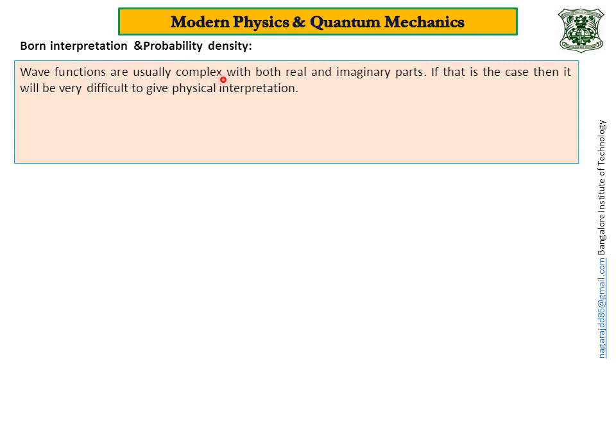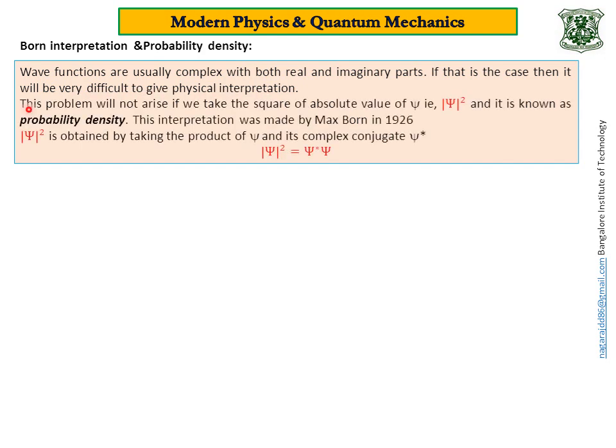Wave functions are usually complex with both real and imaginary parts. If that is the case, then it will be very difficult to give physical interpretation. This problem will not arise if we take square of absolute value of ψ, that is |ψ|². This |ψ|² is known as probability density. See, ψ is called probability, |ψ|² is called probability density. This interpretation was first made by Max Born in 1926. |ψ|² is obtained by taking the product of ψ and its complex conjugate ψ*, that is |ψ|² = ψ*ψ.